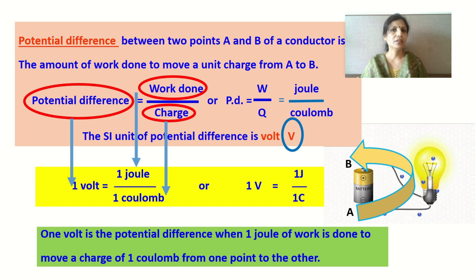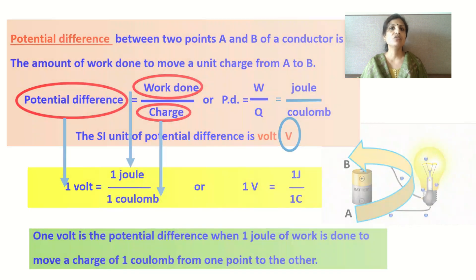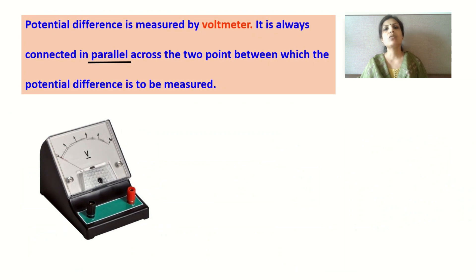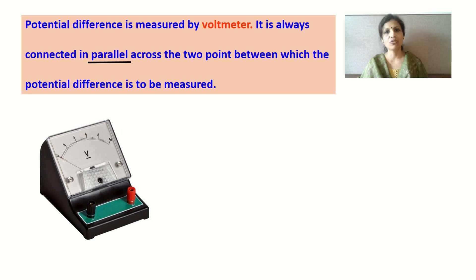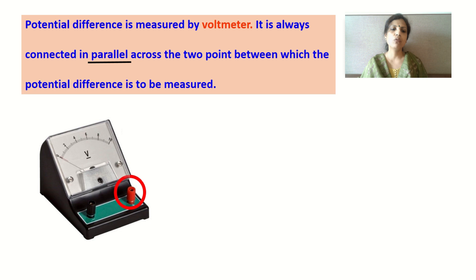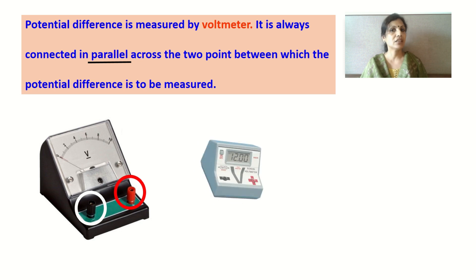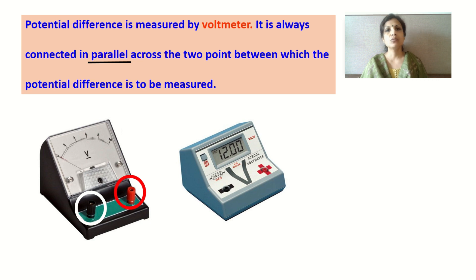The device used to measure potential difference in an electrical circuit is called a voltmeter. This voltmeter is always connected in parallel across the two ends where the potential difference is to be measured. I will explain this in detail in the next part of the video. The voltmeter shown at the bottom of this slide has a positive terminal and a negative terminal. Nowadays, digital voltmeters are also available which give direct digital readings without needing to read a scale.